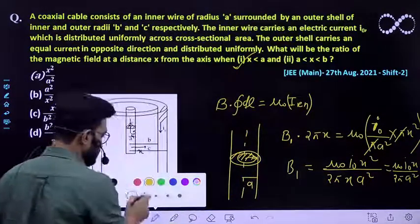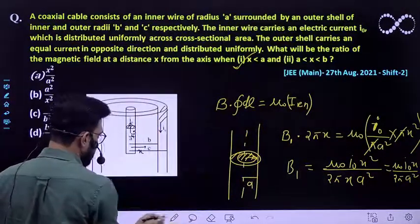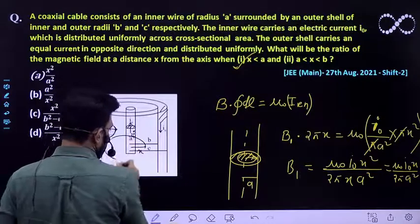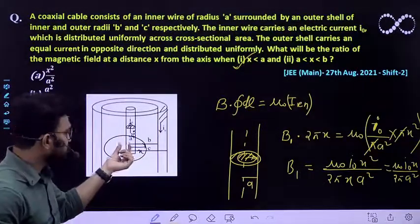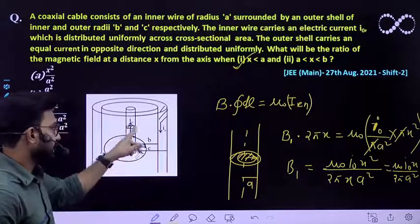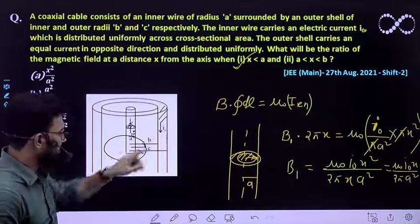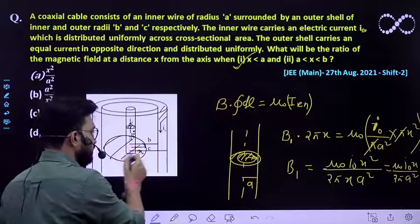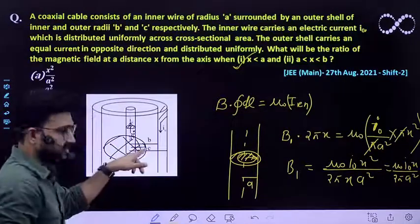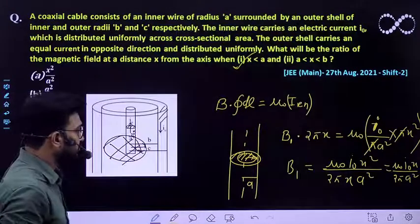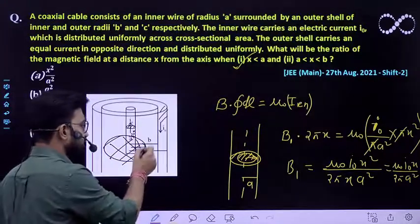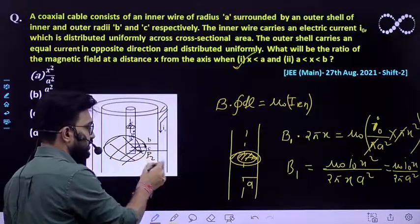Now in the second case for this line integral, the total charge enclosed by it would be I0, not I0 minus I0. Because this much charge must be enclosed by this line integral in the second case when it is between A and B. So let this magnetic field at this point be B2.